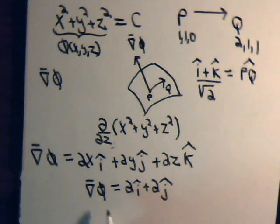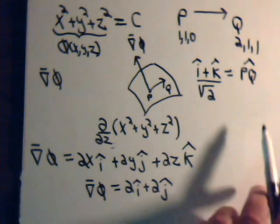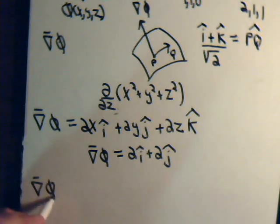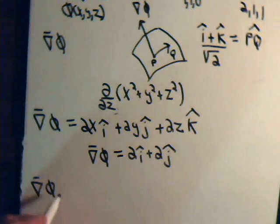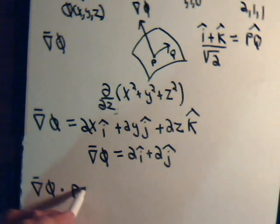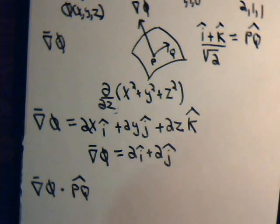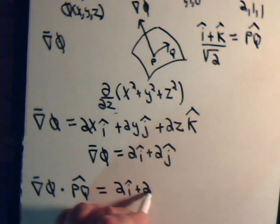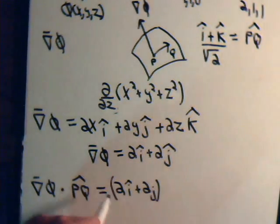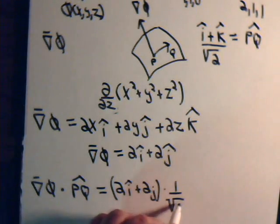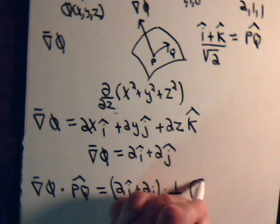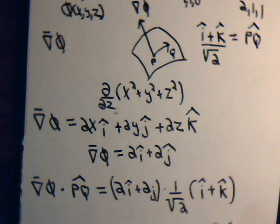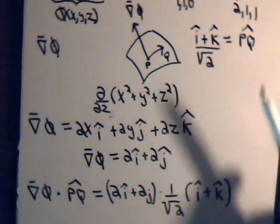Now all we have to do is take the dot product of this with pq. So we have our gradient vector at the point pq. Take the dot product of that with the unit vector pq. So that will be 2i plus 2j. Take the dot product of 1 over the square root of 2 times i plus k. This right here is the unit vector pq.